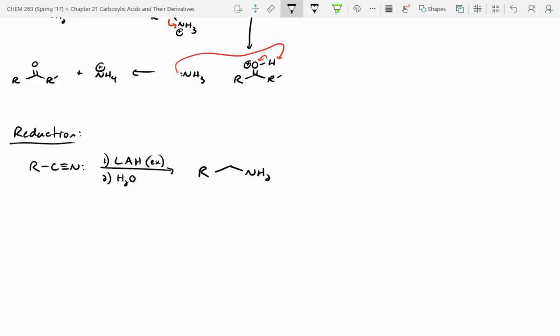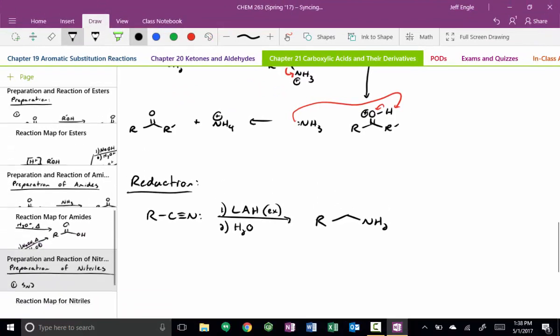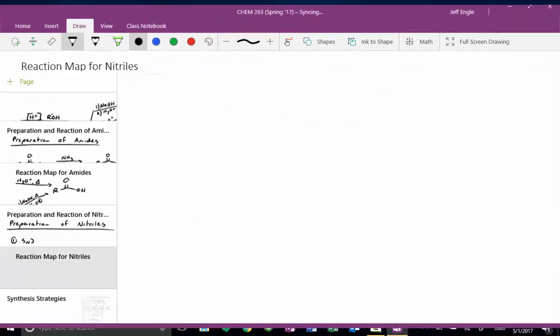It's just a simple reduction mechanism. We're not going to go over the full mechanism because it is a little bit weird, but the overall transformation is going from a nitrile to an amine. All right, so let's make a really small reaction map for nitriles, and then we'll jump into practice problems.